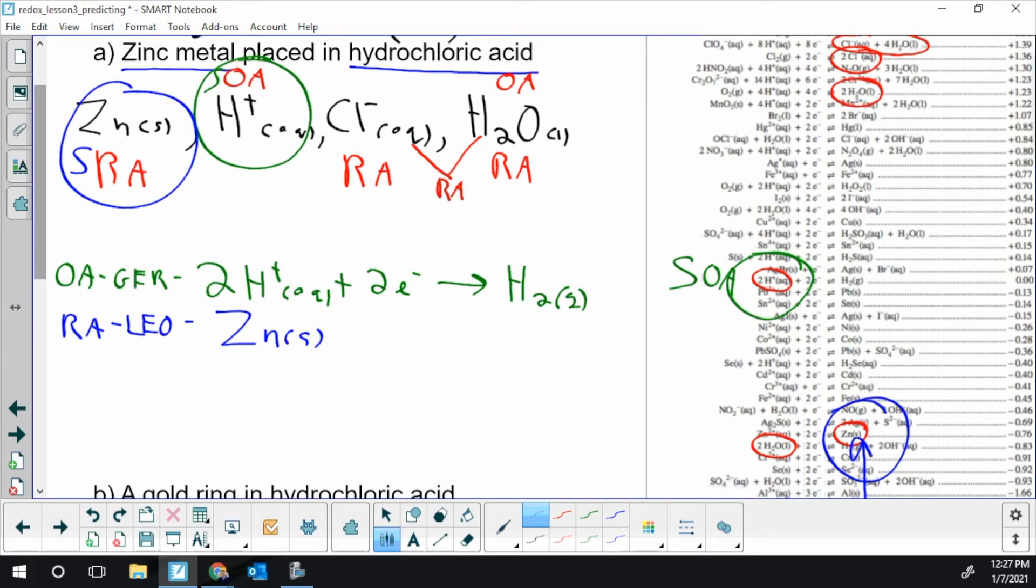Now I've got to flip it. Zinc metal is the strongest RA. And so I have to start there and write this backwards. So zinc produces zinc 2 plus and two electrons. And now I have my two half reactions.